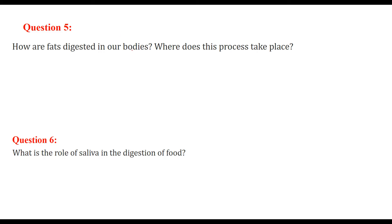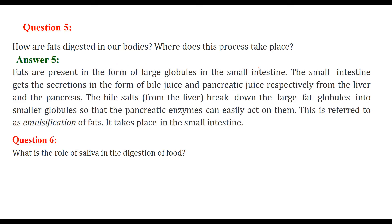How are fats digested in our bodies, and where does this process take place? In the small intestine, fats are present in the form of large globules. The small intestine receives secretions in the form of bile juice from the liver and pancreatic juice from the pancreas. The bile salts break down large fat globules into smaller ones so that pancreatic enzymes can easily act on them. This is known as emulsification of fat.